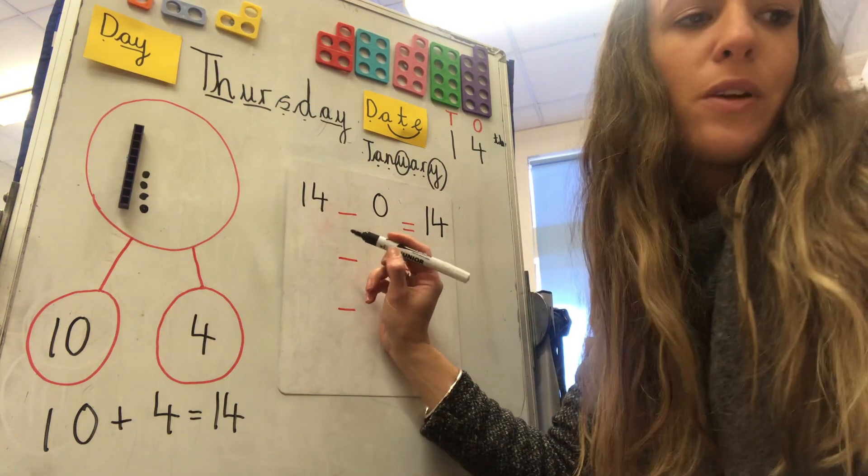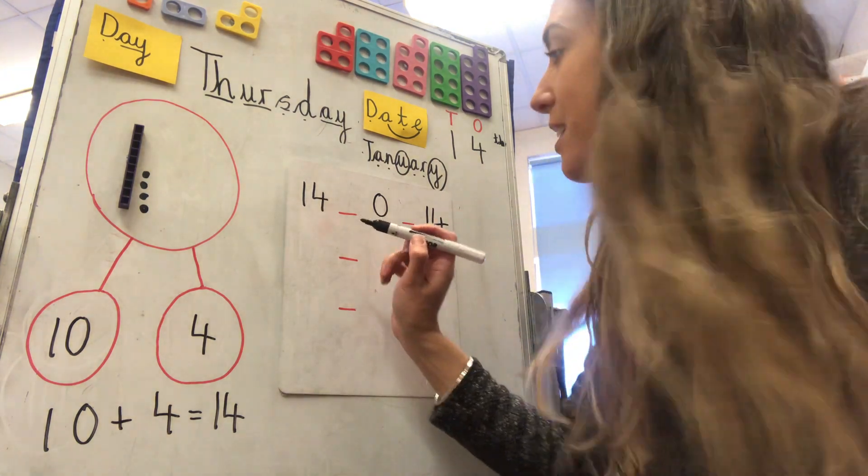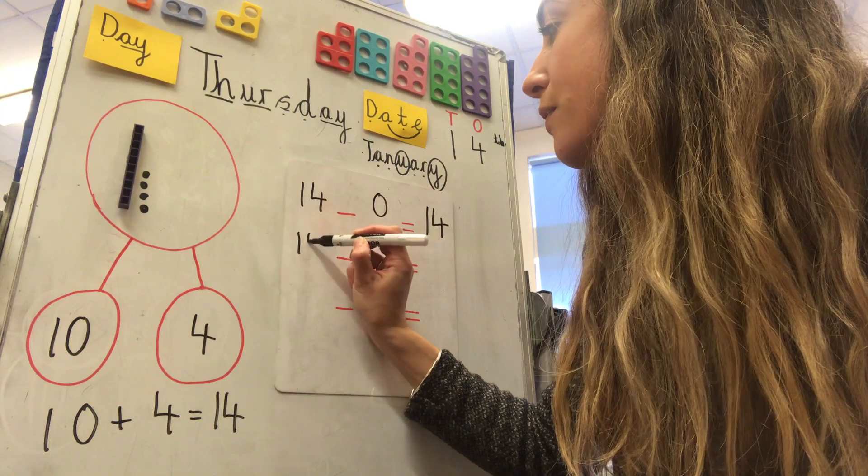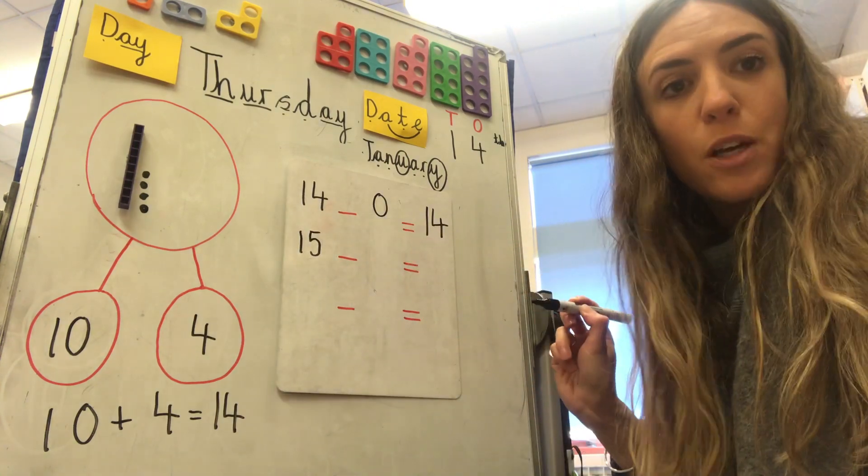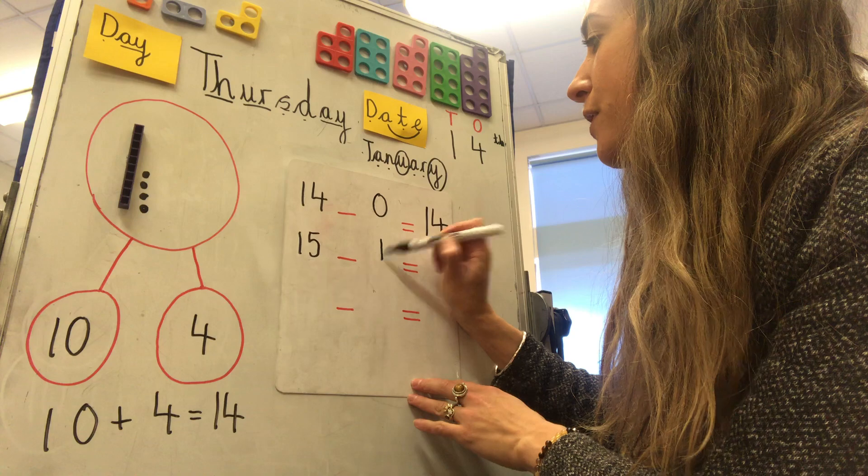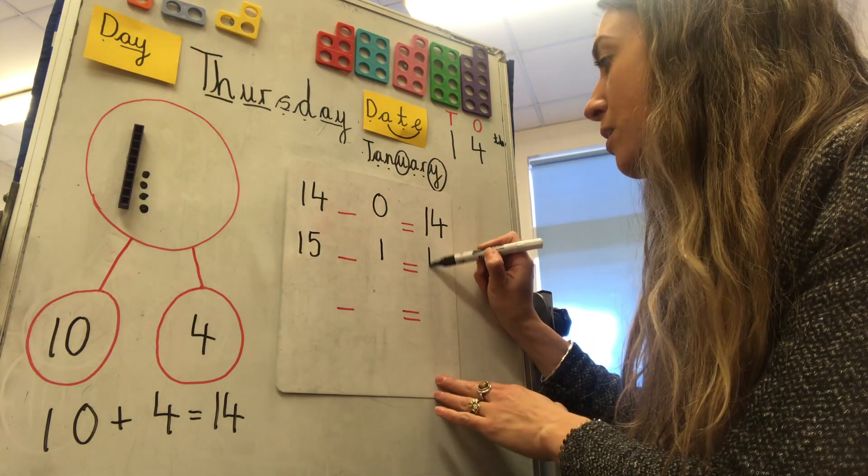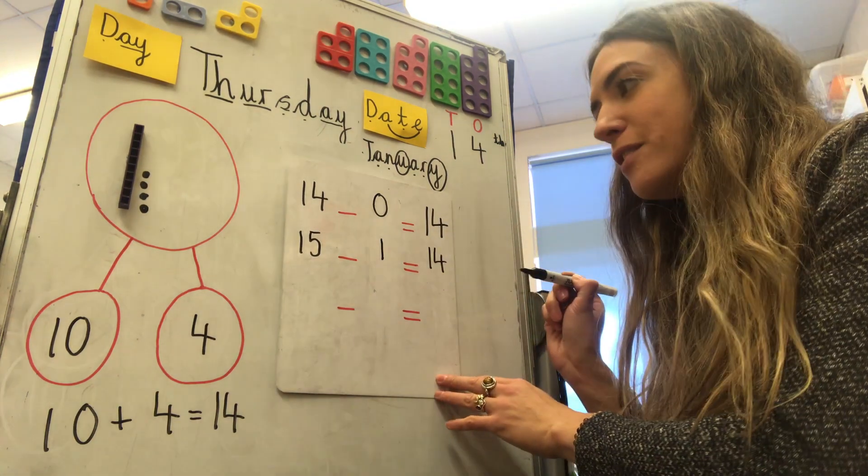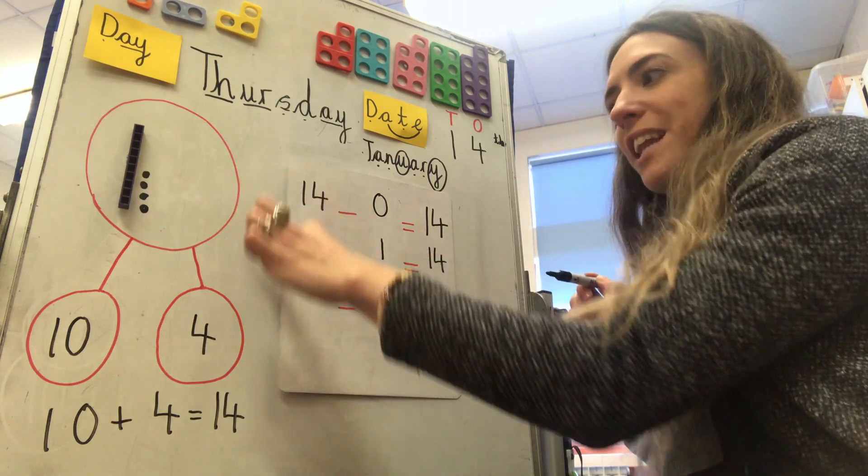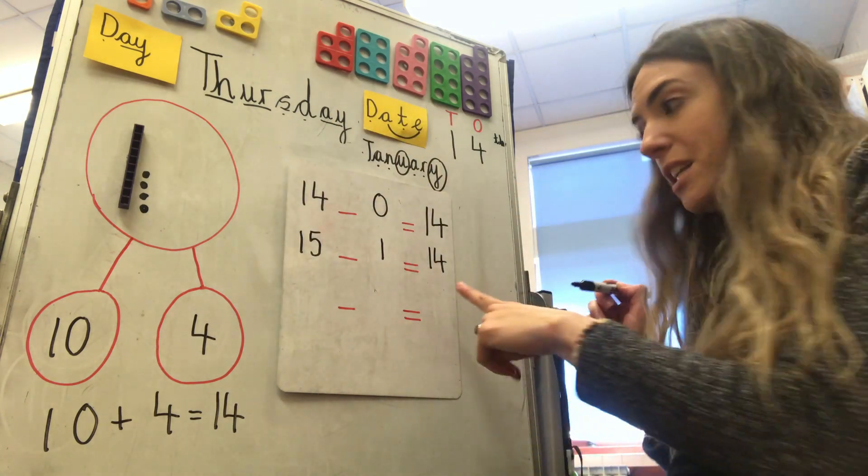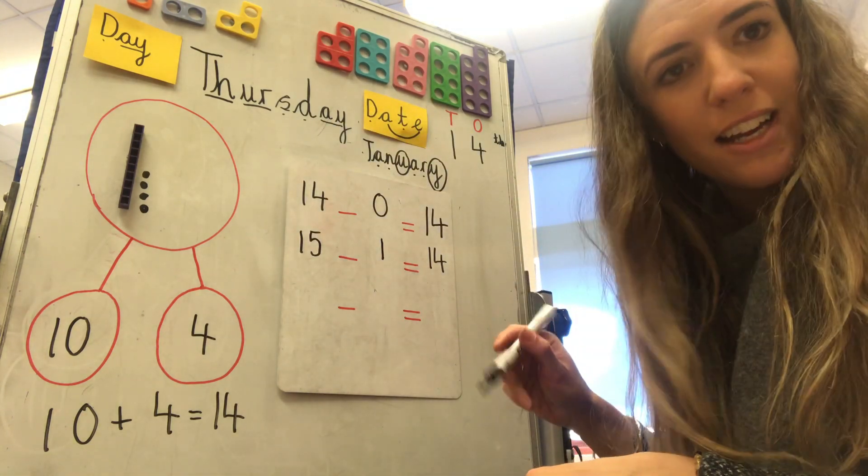Another one then. What could I have next? Fifteen. Okay. Fifteen, take away one. Good. Fifteen, take away one. We have fourteen left because we know one less than fifteen is fourteen on the number line. Super.